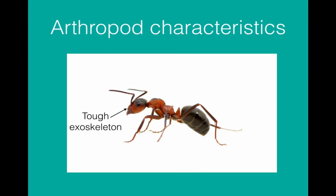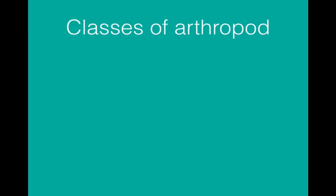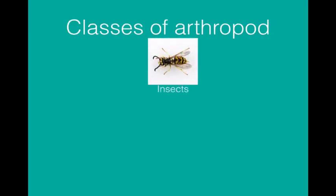They don't have a skeleton like vertebrates do. There are four classes of arthropods. We have the insects, including flies, butterflies, beetles, ants, etc.